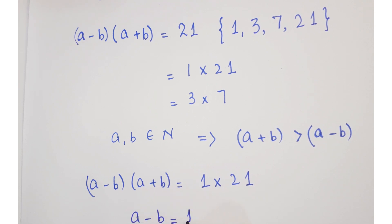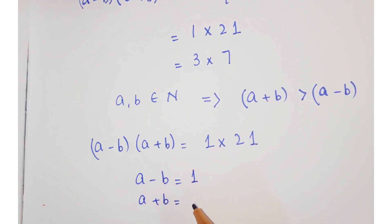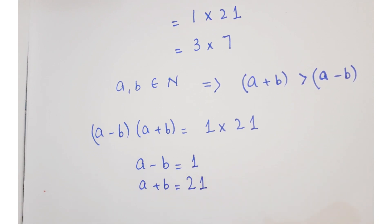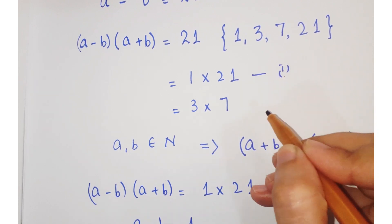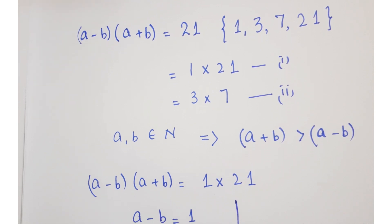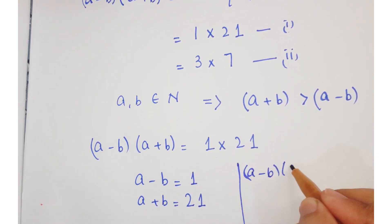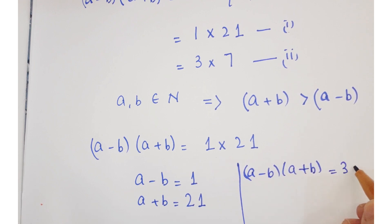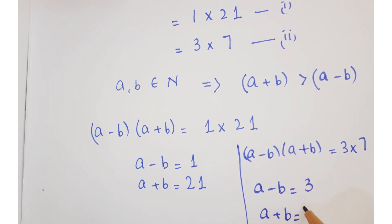So we can say that a minus b equals 1 and a plus b equals 21. This is the first condition. In the second possibility, we have a minus b into a plus b equals 3 into 7, or a minus b equals 3 and a plus b equals 7.